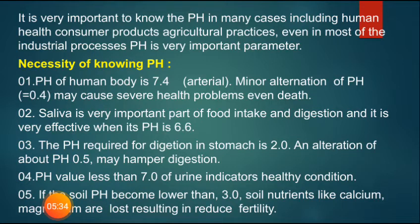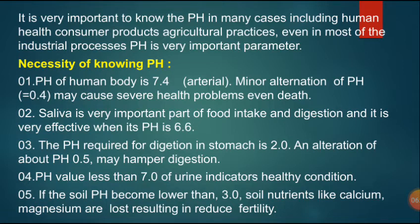It is very important to know pH in many cases including human health, consumer products, agricultural practices, and most industrial processes. The pH of human body arterial blood is 7.4; minor alterations may cause severe health problems or even death. Saliva is very effective for digestion when its pH is 6.6. The pH required for digestion in the stomach is 2.2, and an alteration of about 0.5 may hamper digestion. A urine pH less than 7 indicates a healthy condition. If soil pH becomes lower than 3, nutrients like calcium and magnesium are lost, resulting in reduced fertility.